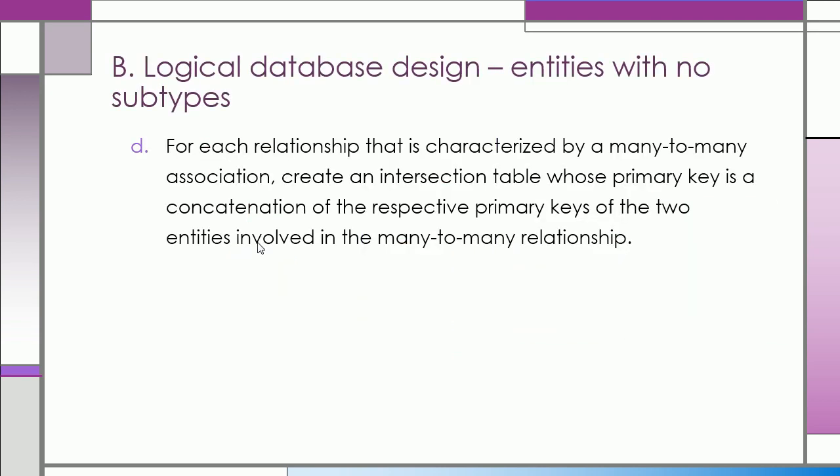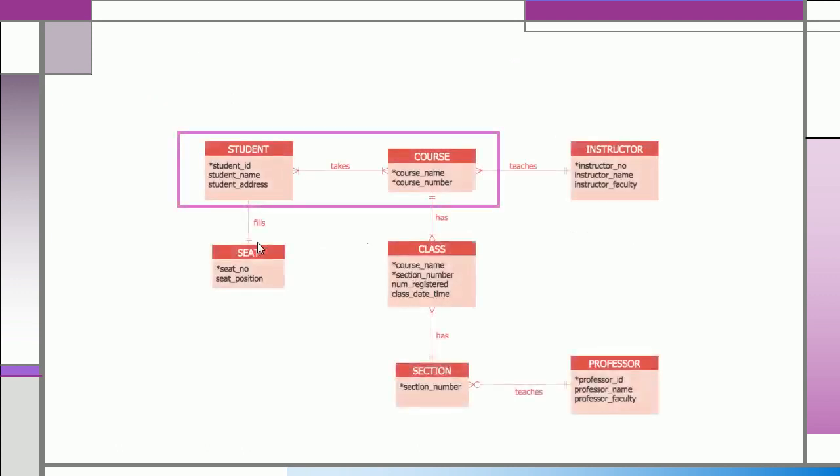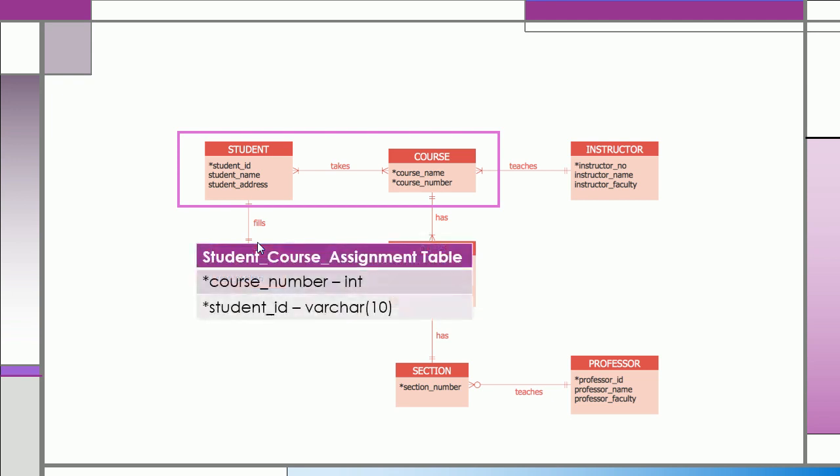For each relationship that is characterized by a many-to-many association, create an intersection table, whose primary key is a concatenation of the respective primary keys of the two entities involved in the many-to-many relationship. As an example, we have the student and course entities. We make an intersection table, which is the student course assignment table. And, we make course number and student ID as its primary key.